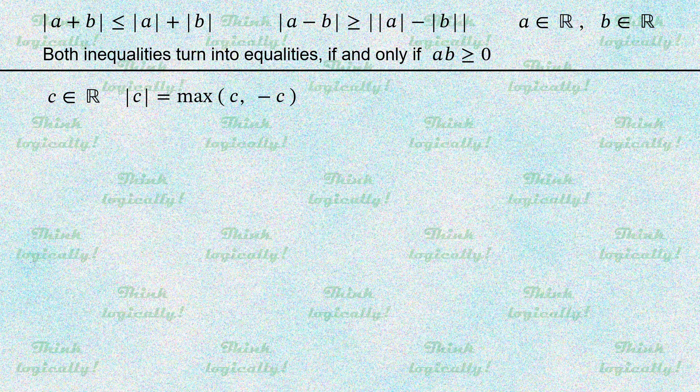From the definition of absolute value, it follows that the absolute value of a number is always non-negative, and a real number never exceeds its absolute value. A number can be equal to its absolute value if and only if this number is non-negative.